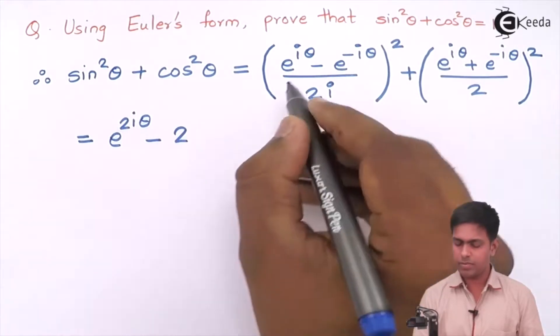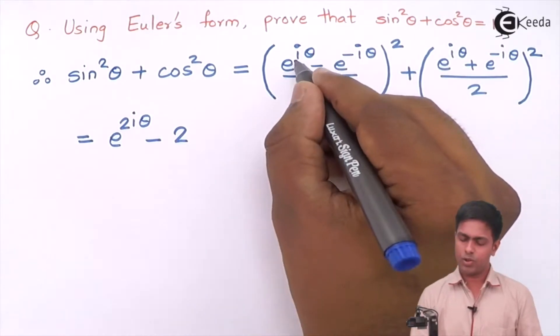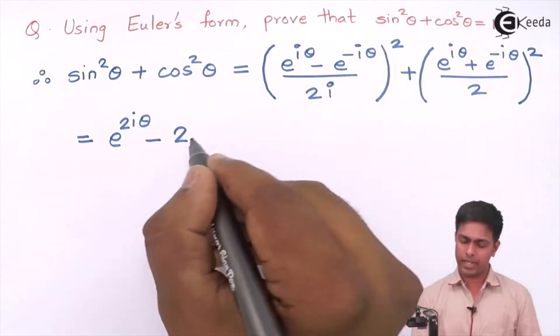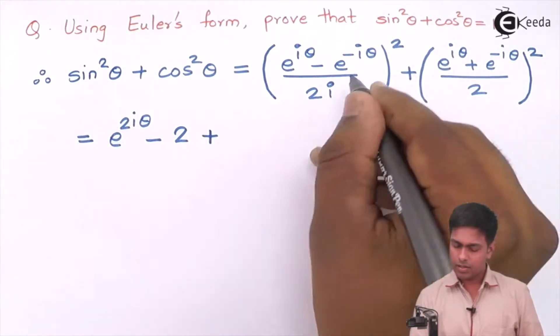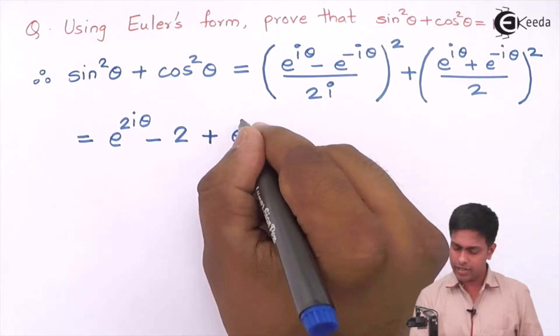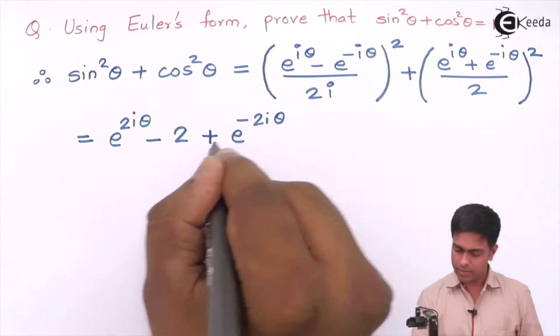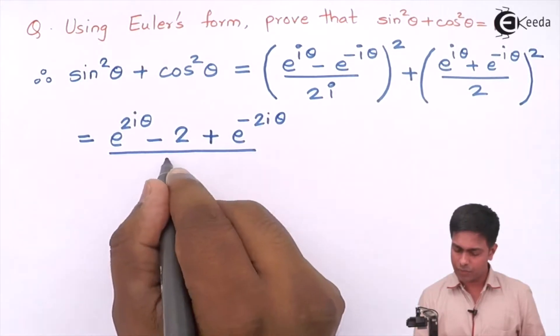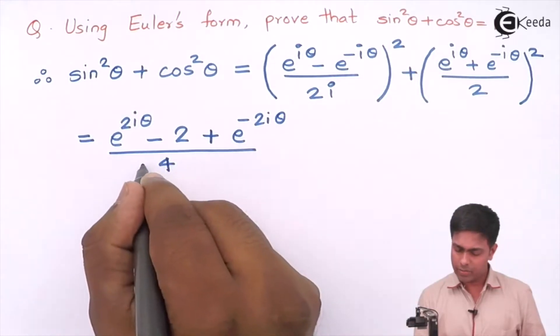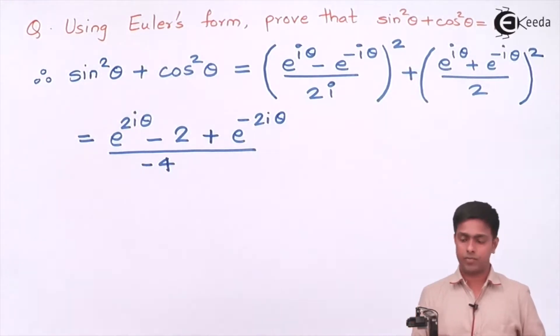Minus 2 times a into b, so if I multiply these two terms it will be cancelled with each other because one is positive one is negative, plus b square that is e raised to minus 2i theta upon square of this. So 2 square is 4 and i square is minus 1, so that will become minus 4.